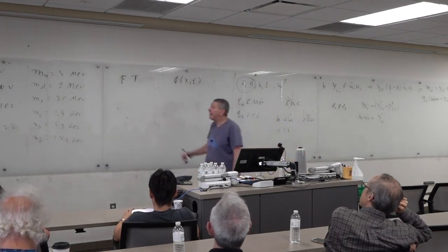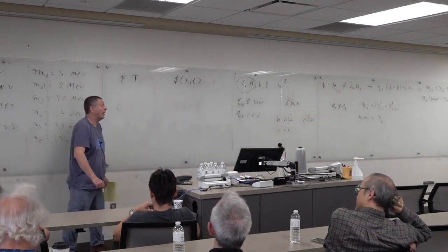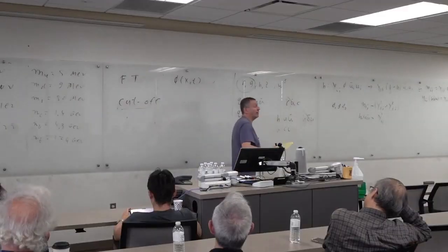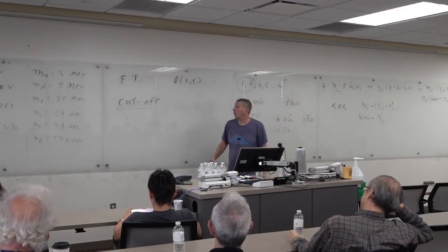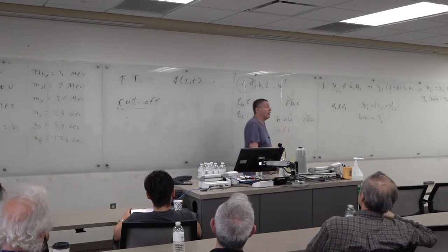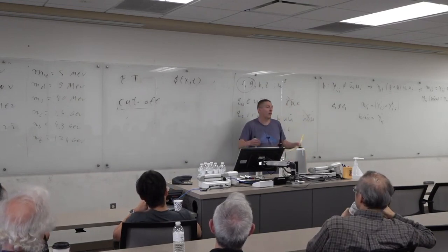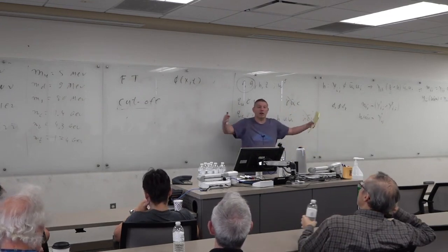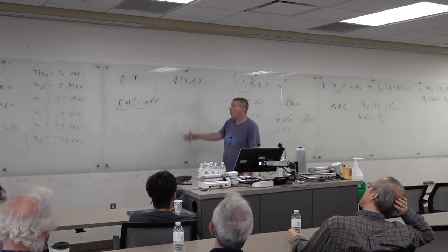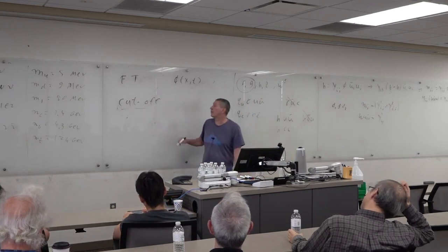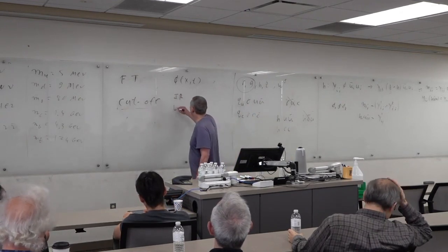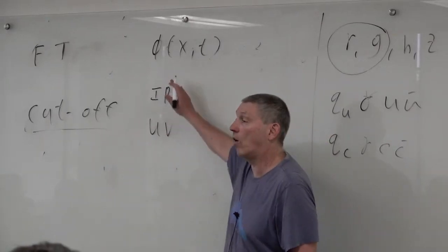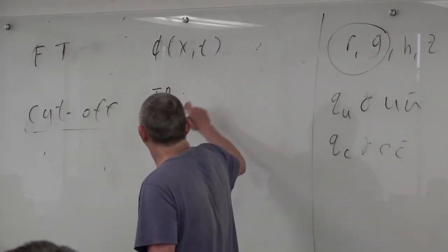Every field theory has what we call a cutoff — a scale beyond which the theory is no longer valid. For sound waves, I cannot describe the theory for wavelengths smaller than about a micron. For density of galaxies, it's only valid for distances bigger than ~10 kiloparsecs. Every theory has a cutoff, and we distinguish two: the infrared cutoff and the UV cutoff. Infrared means long distance; UV means short distance.